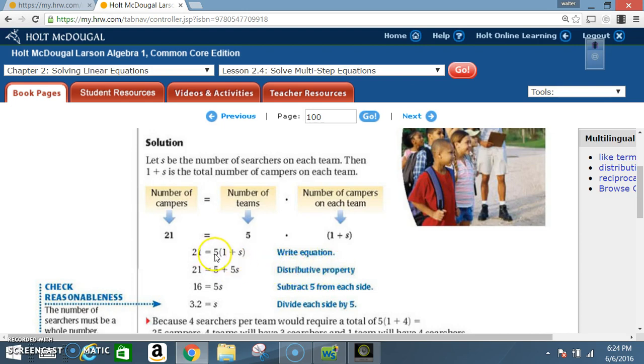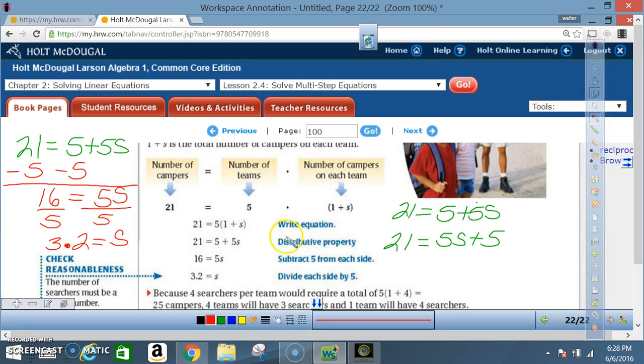Next we use the distributive property. 5 times 1 is 5, 5 times s is 5s. So now we have 21 equals 5 plus 5s. Now we're working with a two-step equation, so we're going to subtract 5 from each side.